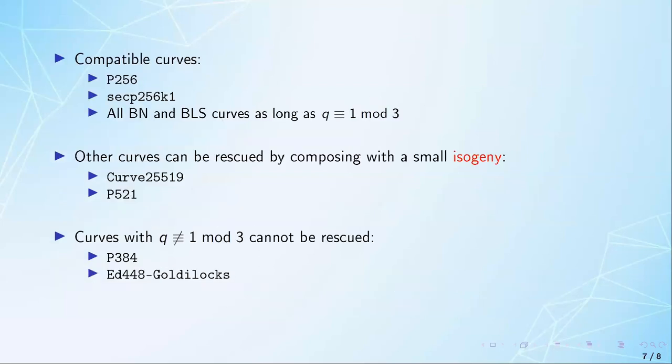Unlike Elligator Squared, this means that our construction is not applicable to every single elliptic curve, but it is applicable to a large set of them. Additionally, the conditions are not invariant under isogenies, so as long as the q equals 1 mod 3 condition is met, the other two conditions can be bypassed by just finding an isogenous curve that does satisfy them, and then composing the SwiftEC construction to that curve with the isogeny.